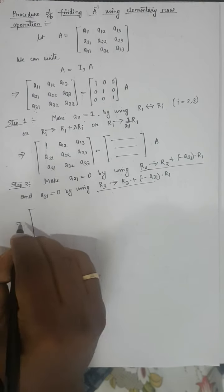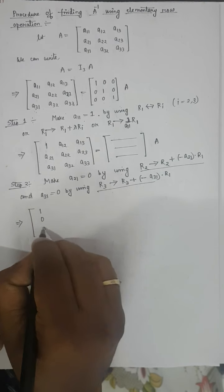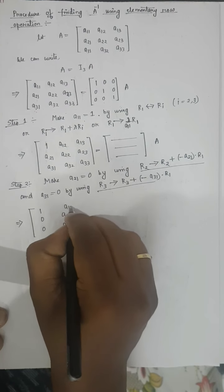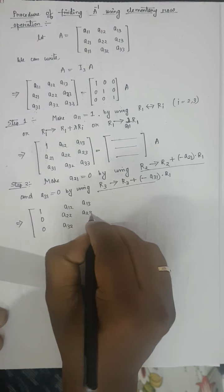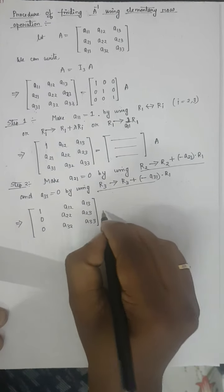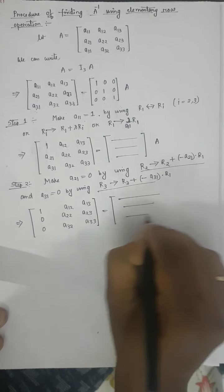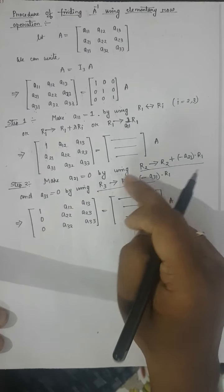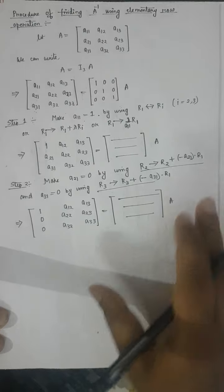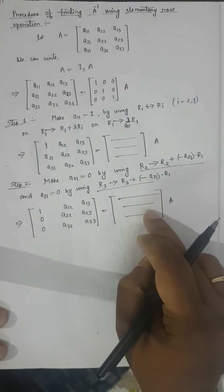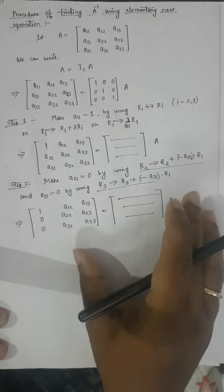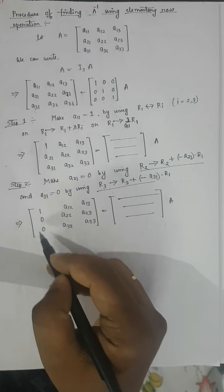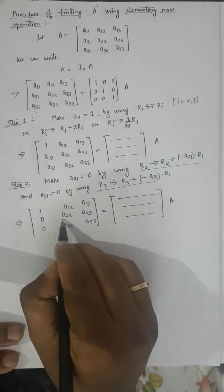After Step 2, we have [1, 0, 0] in the first column. Elements A₂₂, A₃₃, A₁₂, A₁₃, A₂₃, A₃₃ will be some constants. Meanwhile, the right-side matrix automatically changes to another matrix B. Our main motto now is to make the next diagonal element equal to 1.